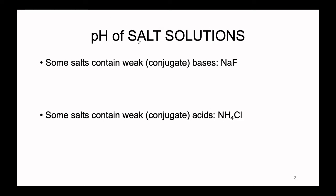What we're going to start talking about today is the pH of salt solutions — cases where we're not explicitly adding a weak acid or a weak base into solution. Salts are defined as some type of ionic compound, so we're looking at the pH change in aqueous conditions when adding an ionic compound. Previously back in chapter nine, we said ionic compounds dissolved in solution have a pH equal to seven, but this isn't always true. First, some salts contain weak or conjugate bases. Second, some salts contain weak or conjugate acids.